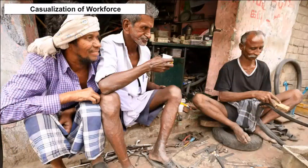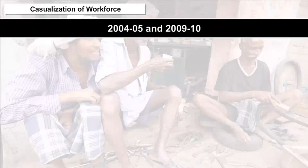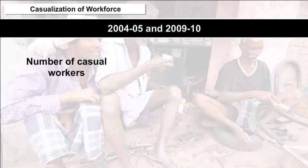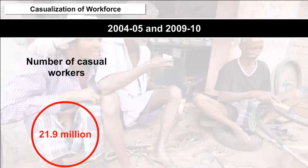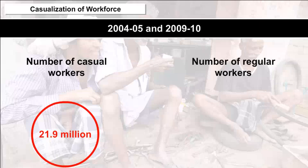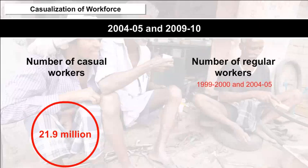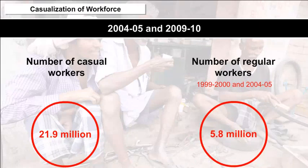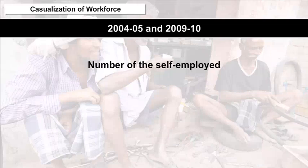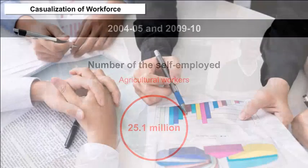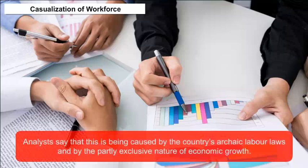Casualization of Workforce: Between 2004-05 and 2009-10, the number of casual workers grew by 21.9 million, while growth in regular workers nearly halved compared with the period between 1999-2000 and 2004-05, reaching only 5.8 million. The number of self-employed — dominated by agricultural workers — declined by 25.1 million. Analysts say this is being caused by the country's archaic labour laws and the partly exclusive nature of economic growth.